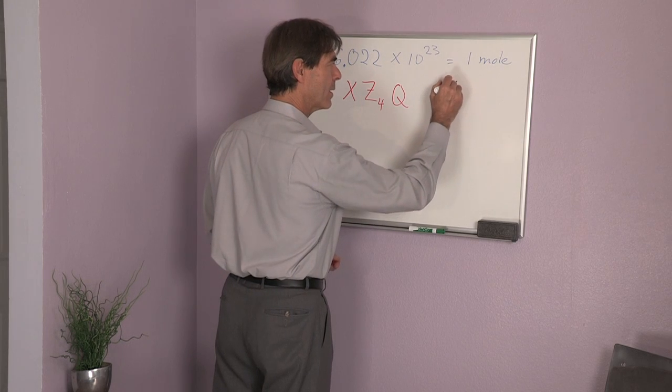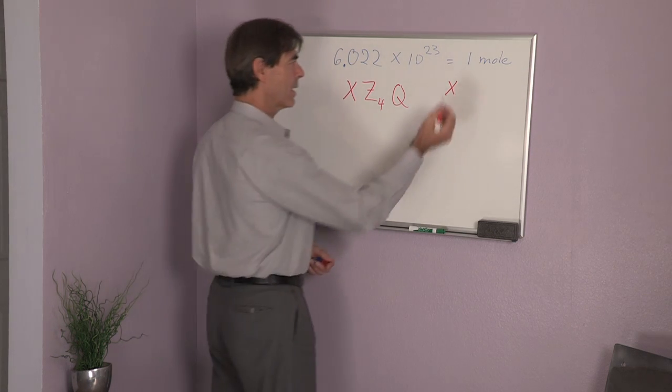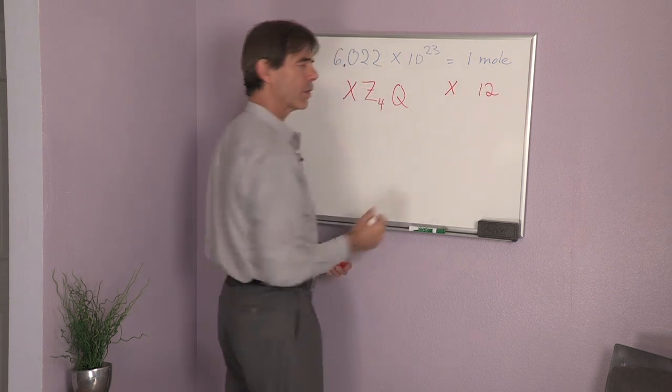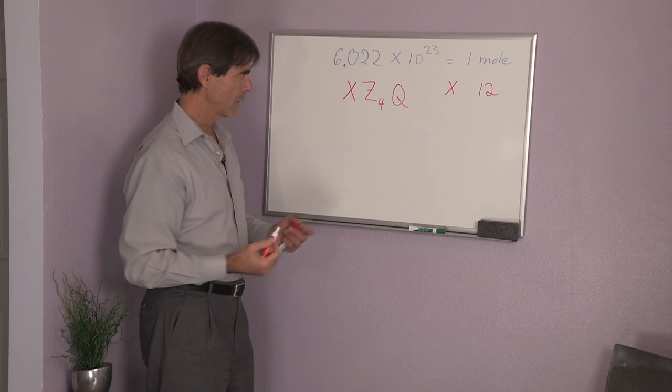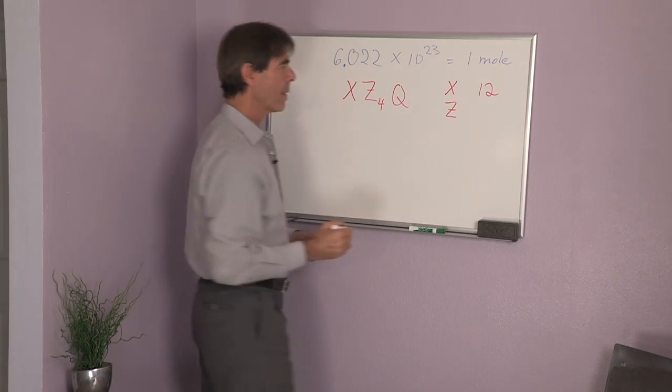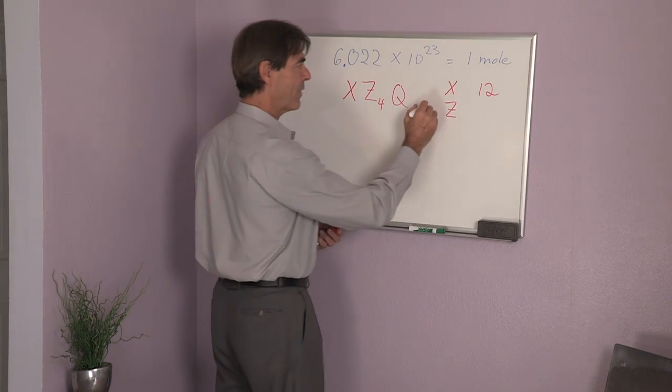Let's suppose my substance X has, you look up the table and it says 12 grams per mole. Okay. Now my substance Z might have one gram per mole, and I have four of them.